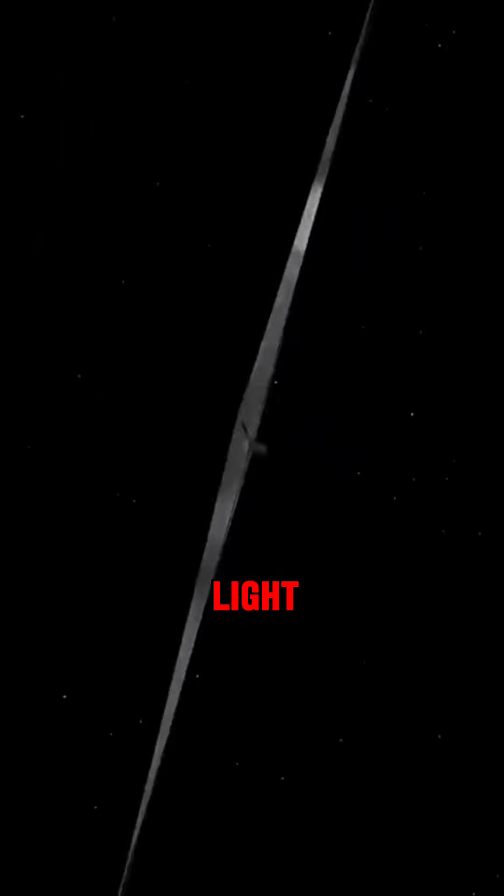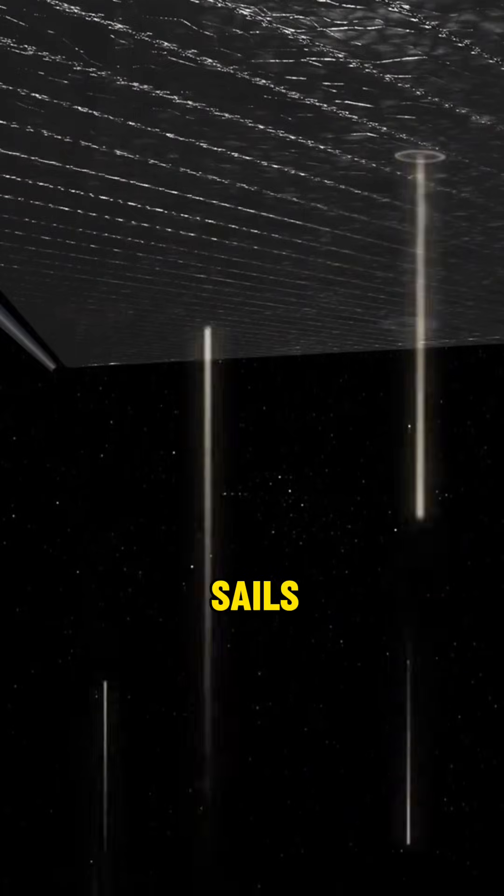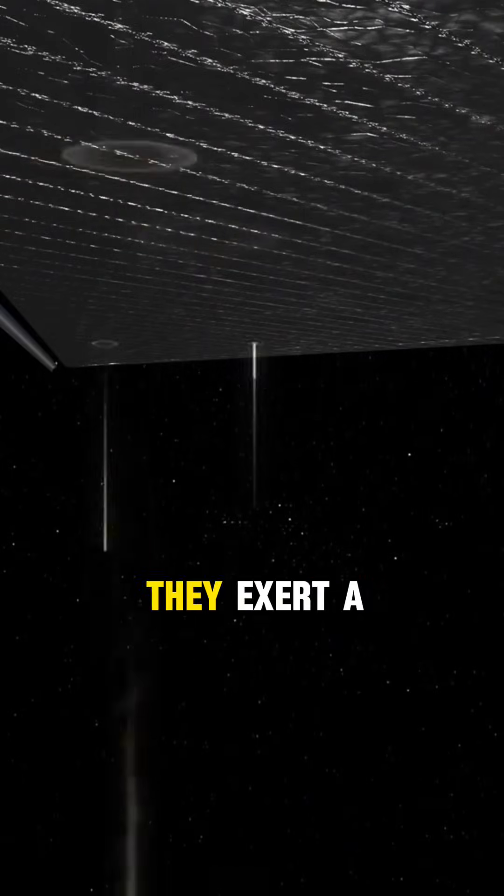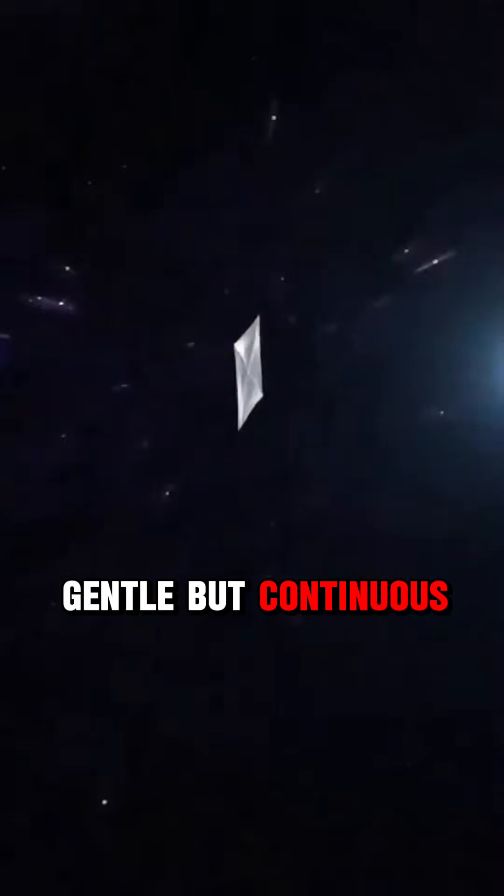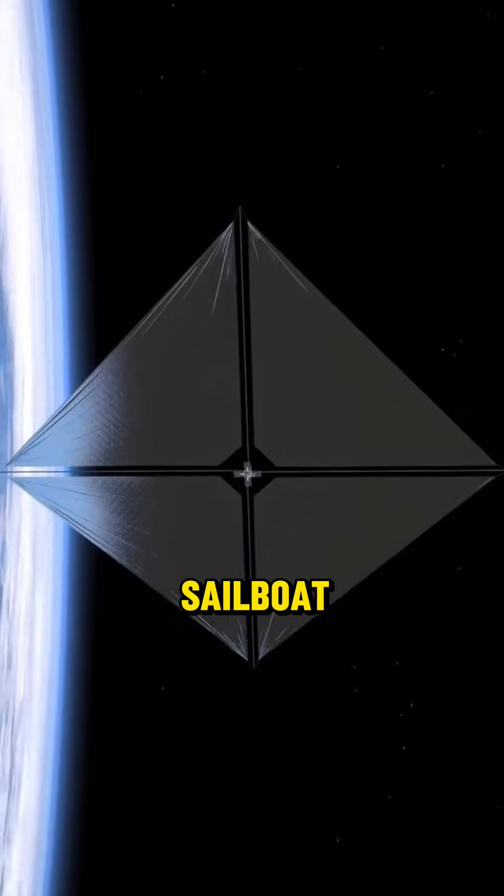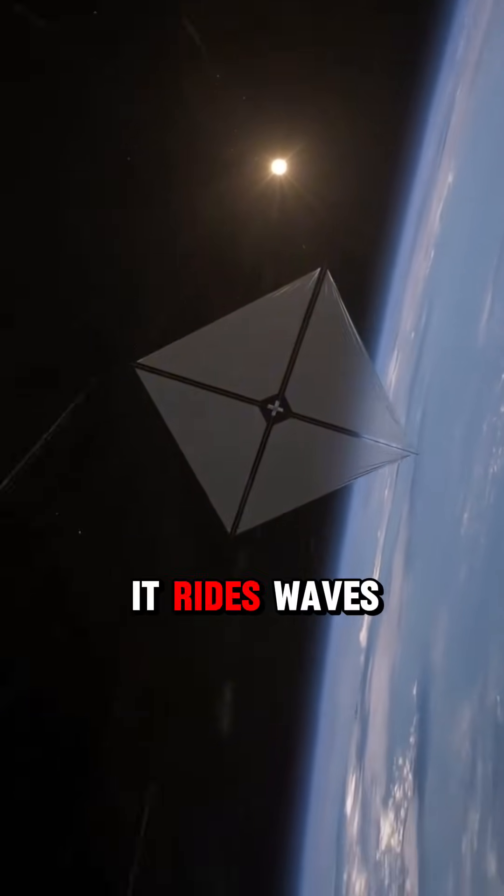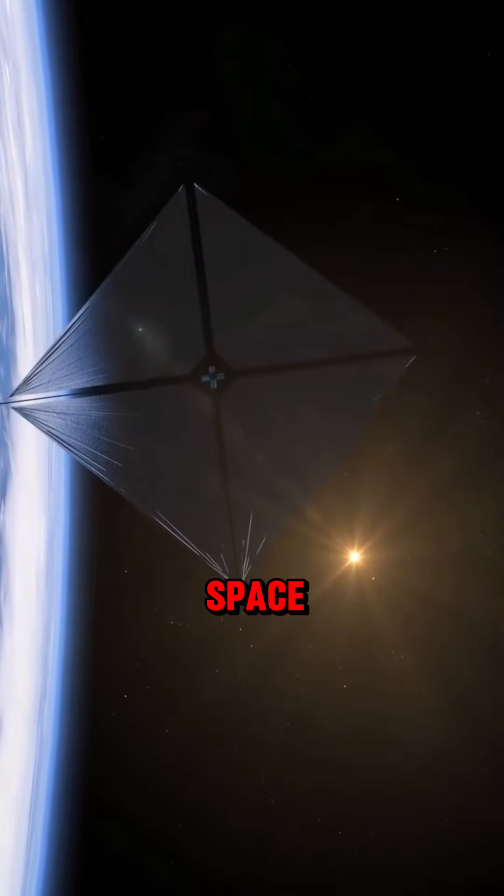Tiny particles of light constantly streaming from the sun. When these photons collide with the sail's reflective surface, they exert a gentle but continuous push, propelling the spacecraft forward. It's the spacefaring equivalent of a sailboat gliding on wind, but instead of oceans, it rides waves of light through the emptiness of space.